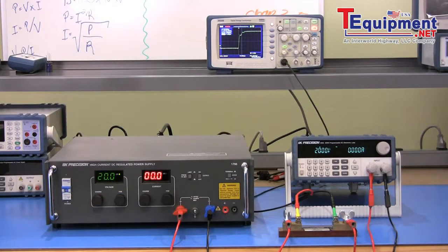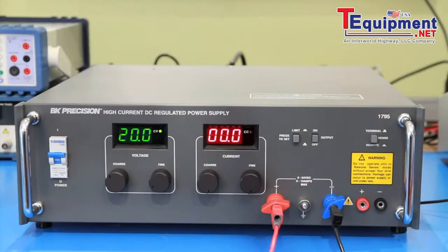Now, we need to configure all the instruments for the setup to measure properly. On the power supply, set the output voltage to 20 volts and the current limit to slightly above 15 amps, so that the power supply can maintain a constant voltage mode at maximum current draw by the load.